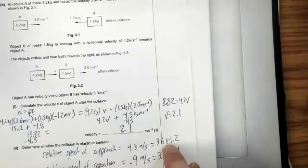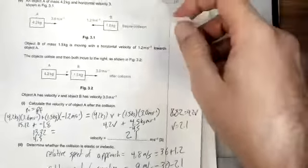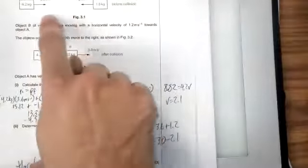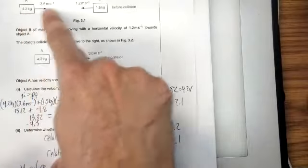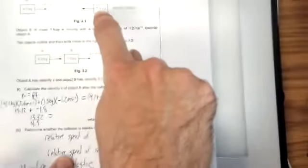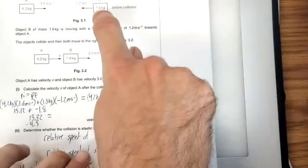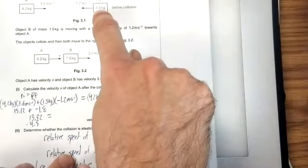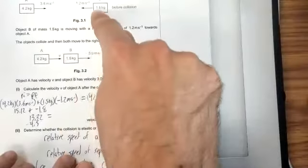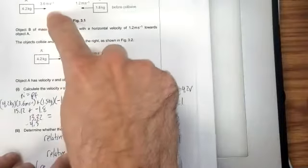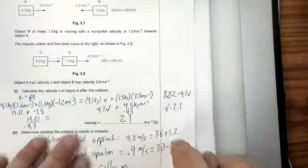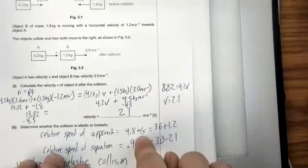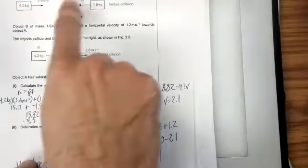If two cars pass by each other on the interstate, one going 70 miles per hour north, one going 70 miles per hour south, they will see each other at 140 miles per hour. Once one speeds towards the other one, the other one is likewise speeding towards it. And so they see each other with the sum of their individual speeds. That's the relative speed. For this example, it's 4.8, 3.6 plus 1.2.